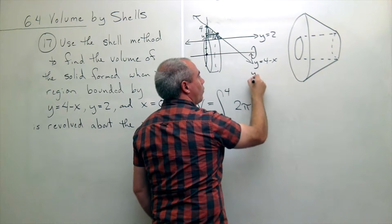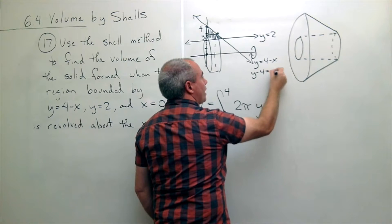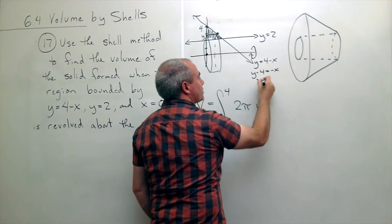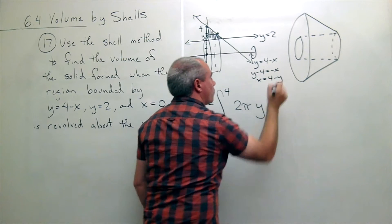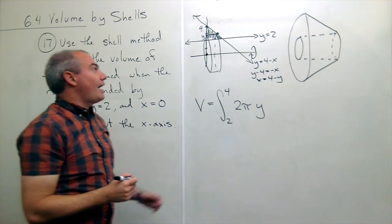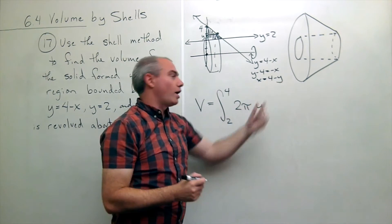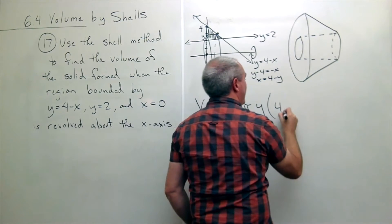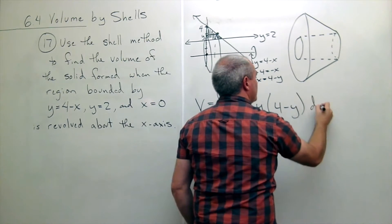which would be that y minus four is minus x, or x is equal to four minus y. So my height in this case is four minus y. So I'll write that in as my height, four minus y dy.